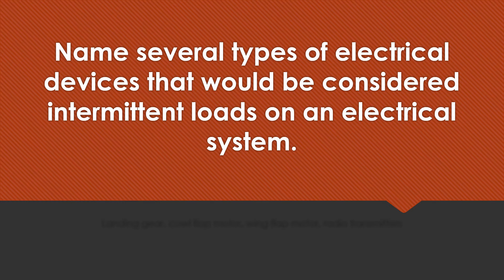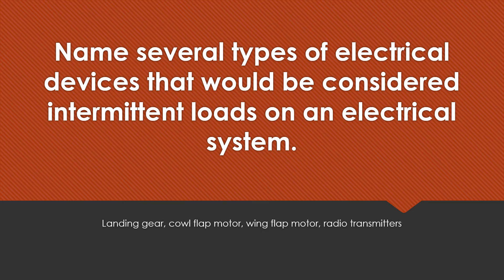Name several types of electrical devices that would be considered intermittent loads on an electrical system. Landing gear, cowl flap motors, wing flap motors, and radio transmitters.